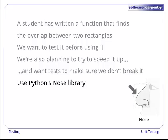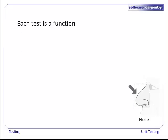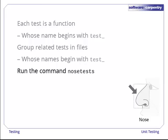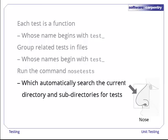We're going to use a Python library called nose to organize our tests. In nose, each test is a function whose name begins with the letters TEST underscore. We can group tests together in files whose names also begin with the letters TEST underscore. To execute our tests, we run the command noseTests. This automatically searches the current directory and its subdirectories for test files and runs the tests they contain.